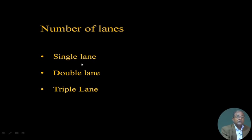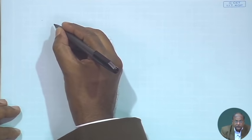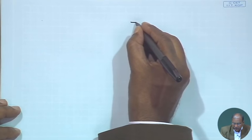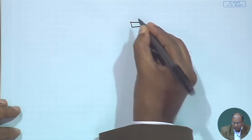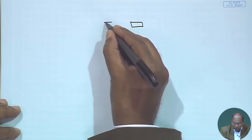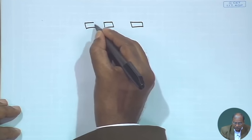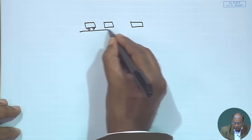Coming to single lane, double lane, and triple lane — this is what we have to consider. Just to give a general idea: how shall we decide? We can decide by considering vehicles on the road. Obviously you should have another vehicle behind, and they are moving one after another.